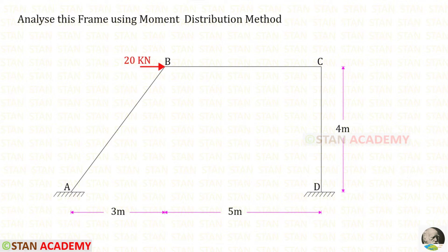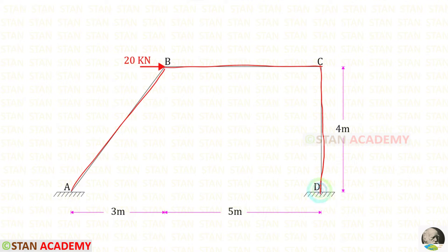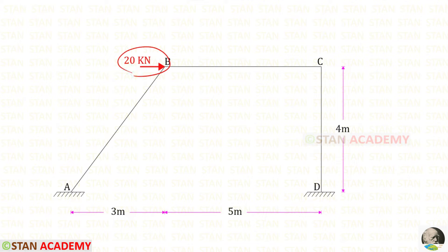Hello everyone. Today we are going to analyze this frame using the moment distribution method. In this frame there is an inclined member AB, a horizontal member BC, and a vertical member CD. There is no member load. At point B we have a nodal point load of 20 kilo Newton. Since this load is acting towards the right side, this frame will sway towards the right side.